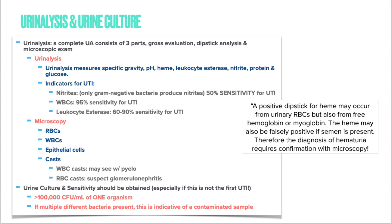Indicators for a urinary tract infection on your UA are positive nitrites, positive white blood cells, and leukocyte esterase. Nitrites are only 50% sensitive, white blood cells are 95% sensitive, and leukocyte esterase is 60 to 90% sensitive for UTI. On the microscopic exam, we look at red blood cells, white blood cells, epithelial cells, and casts. White blood cell casts can indicate pylo, and red blood cell casts can indicate glomerulonephritis.